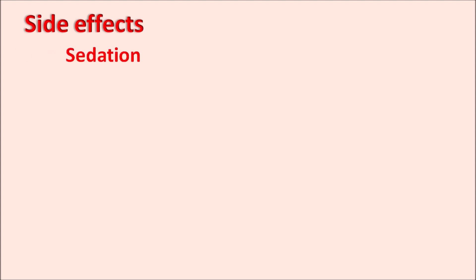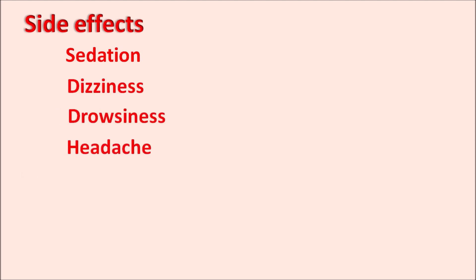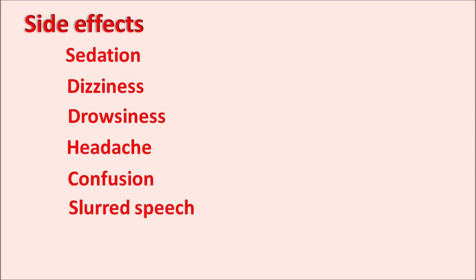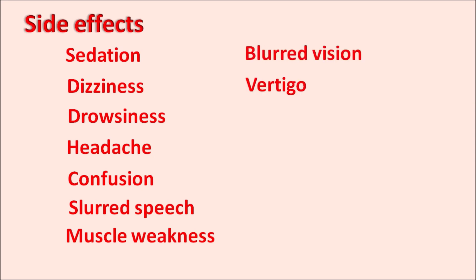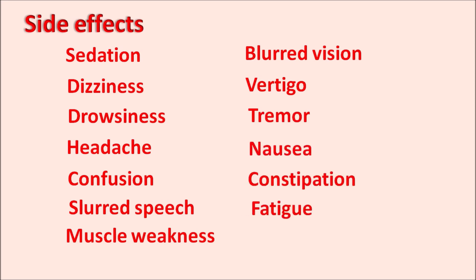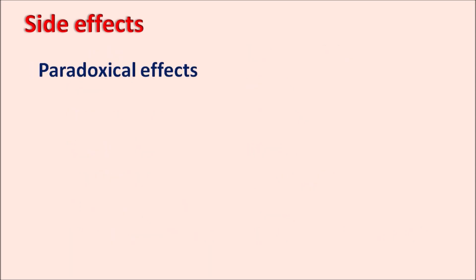What are the side effects? The important side effects of diazepam are mainly due to its central depression: sedation, dizziness, drowsiness, headache, confusion, slurred speech, muscle weakness, and muscle relaxation. Other side effects include blurred vision, double vision, vertigo, tremor, nausea, constipation, and fatigue. This drug also produces anterograde amnesia — loss of memory of current events. Diazepam can also produce some paradoxical effects, which are quite opposite to its classical actions.